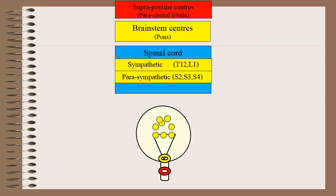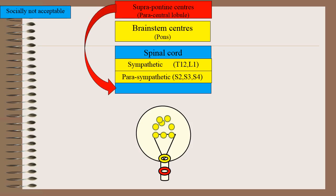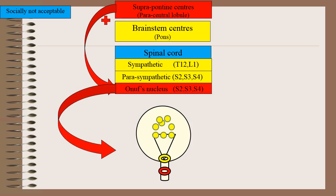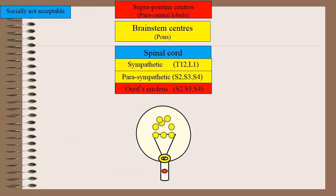The suprapontine center decides whether it is socially acceptable to void or not. If it is socially not acceptable, the suprapontine center continues its facilitatory impulses to Onuf's nucleus, and Onuf's nucleus in turn gives impulses through the pudendal nerve, continuing tonic external urethral sphincter contraction.